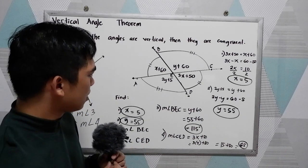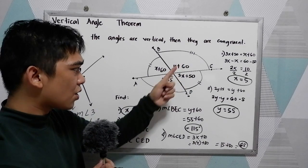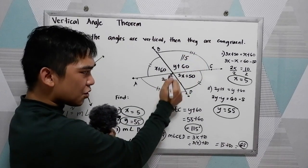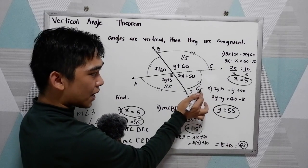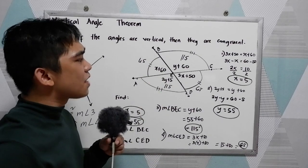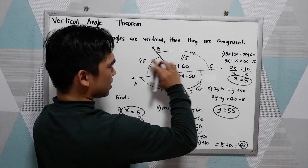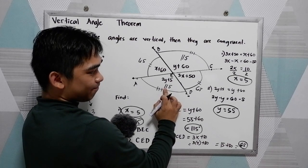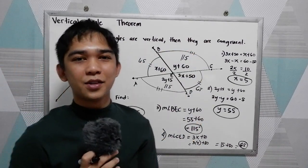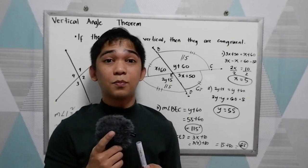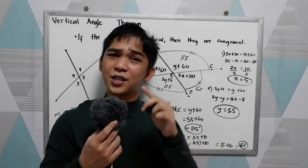To verify the answers: angle BEC is 115 degrees, and by the vertical angle theorem, its opposite angle is also 115. Angle CED is 65 degrees, and by the vertical angle theorem, its opposite angle is also 65. To further verify, apply the linear pair: 65 plus 115 equals 180 degrees. That covers complementary angles, supplementary angles, the linear pair postulate, and the vertical angle theorem. Thank you for watching.